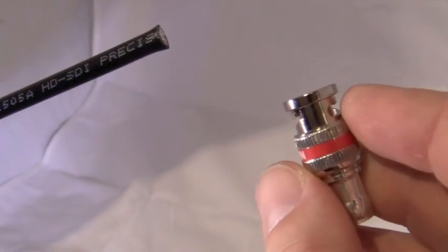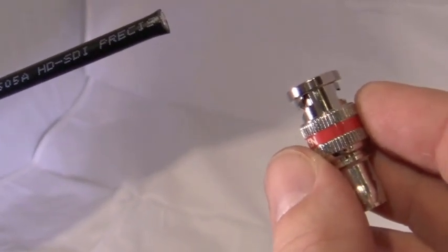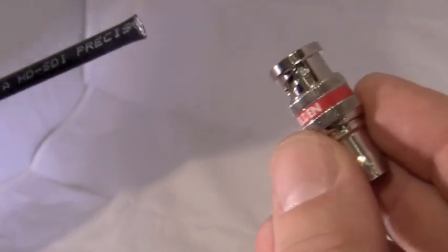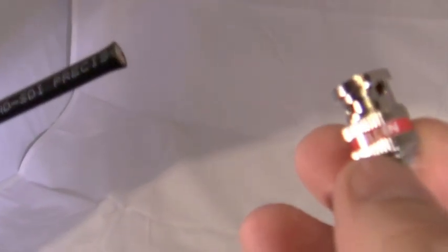This video covers the installation of the Belden One Piece HD Brilliance BNC Broadcast Compression Connector onto Belden Video Brilliance 1505A Cable.